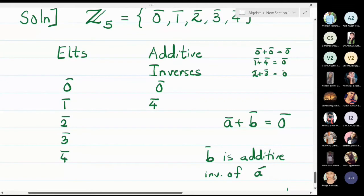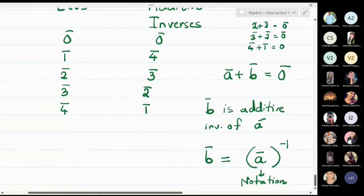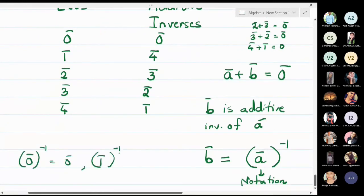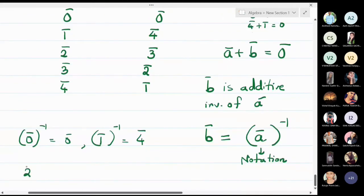2̄ + 3̄ is also 0̄, so the additive inverse of 2̄ is 3̄. The additive inverse of 3̄ is automatically 2̄. And 4̄ + 1̄ is 0̄, so the inverse of 4̄ is 1̄. In notation: 0̄⁻¹ = 0̄, 1̄⁻¹ = 4̄, 2̄⁻¹ = 3̄, and so on.